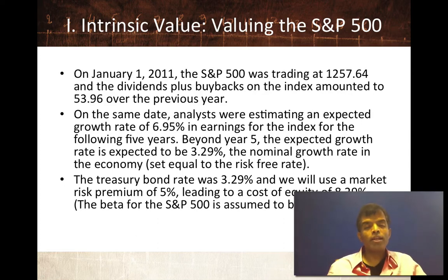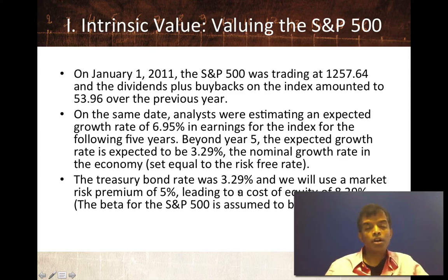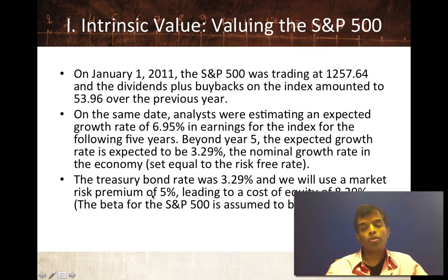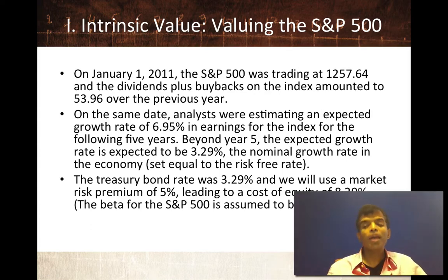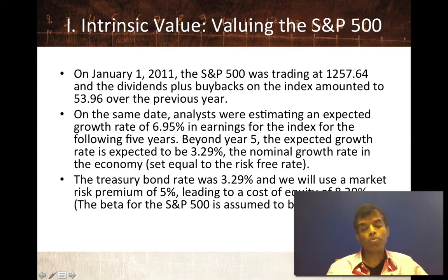So what I have effectively is a 53.96 cash flow growing at 6.95% for the next five years and 3.29% beyond that. For the final piece of the puzzle, I estimate the return I would demand for investing in the S&P 500. I start with the risk-free rate of 3.29% and assume an equity risk premium of 5% — that's my judgment call based on history and the risk I see in stocks. That gives me a cost of equity of 8.29%. Now I have all the pieces of the puzzle.